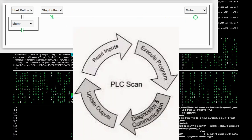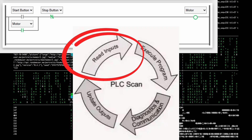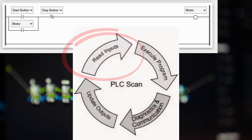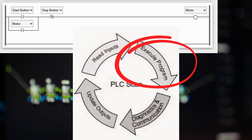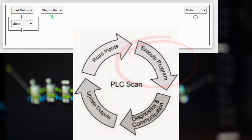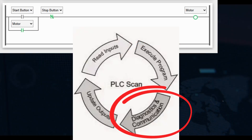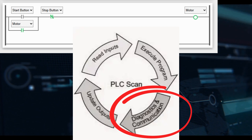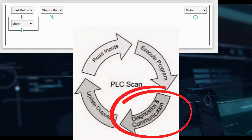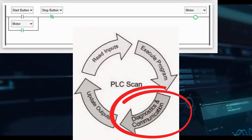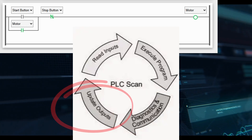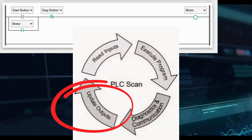Step 1: The inputs are read. Step 2: Your program is solved from left to right, top to bottom. The output from the previous rung is available for use by the next rung. Step 3: Communication and diagnostics are performed. This step may or may not happen depending on the PLC simulator used. Step 4: The outputs are written.